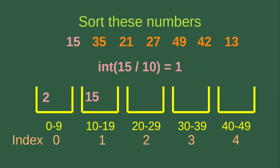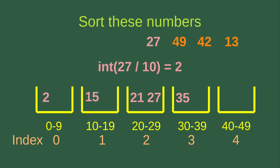Next we handle 15: 15 divided by 10 is 1.5, and the integer part is 1, so number 15 goes to bucket index 1. Now we handle 35: 35 divided by 10 is 3.5, and the integer part is 3, so 35 goes to bucket index 3. Then for 21: 21 divided by 10 is 2.1, and the integer part is 2, so 21 goes to bucket index 2.